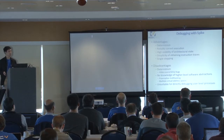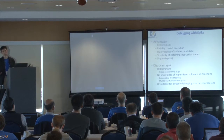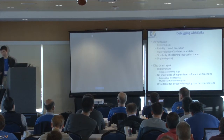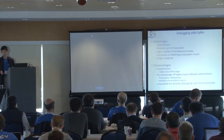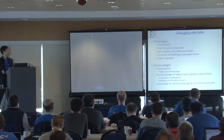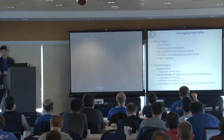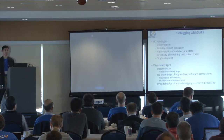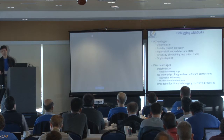Now, there are also definite disadvantages with Spike. First of all, it's deterministic, which means that you can't really debug concurrency bugs there. And it has no knowledge of high-level software abstractions, so when you have things like preemptive multitasking or multiple virtual address spaces, such as within an operating system, then there's no way to directly debug user-level processes very easily.